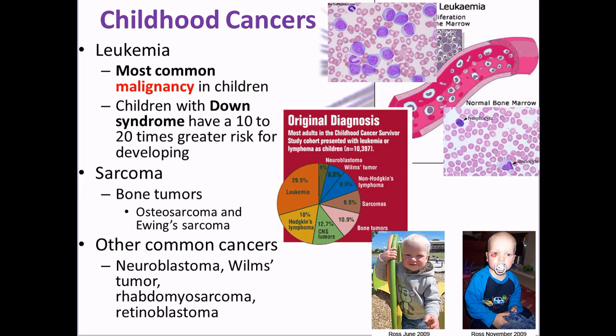Children with Down syndrome have about 10 to 20 times higher risk of leukemia. Remember, Down syndrome children also have heart problems — linking back to our genetics section. Among survivors ages 15 to 39, most are still going to be leukemia survivors. You can also see Hodgkin's and other tumors like neuroblastoma among the common things childhood cancer survivors had.